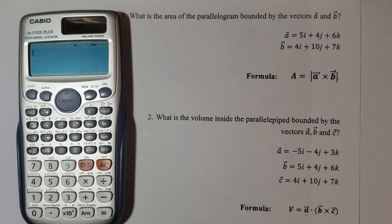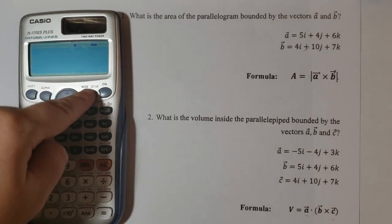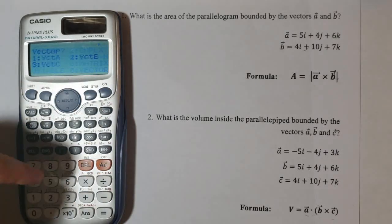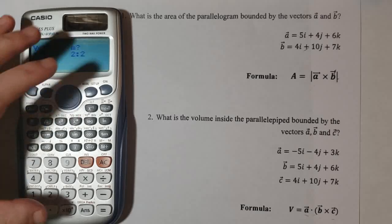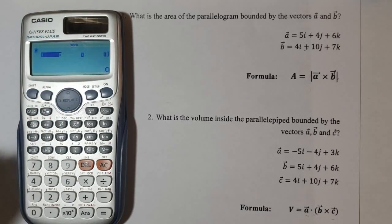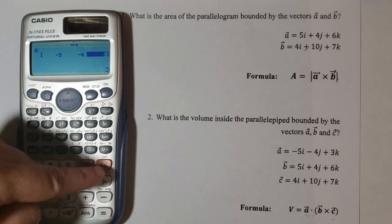What we will do first is we're gonna insert the values of the vectors in the calculator. Go to mode choose 8 for vector 1 for vector a. And now 1 for the 3 directions of the vector. We have minus 5 equal, minus 4 equal, 3 equal, AC.